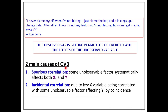There are two main causes of omitted variables bias, or OVB. One is spurious correlation: some unobservable factor systematically affects both the key X variable and the dependent variable Y. The other — not so easy to deal with — is incidental correlation, where the key X variable is correlated with some unobservable factor that affects the outcome just by coincidence. I'll give you examples of both.